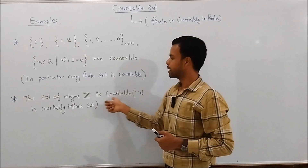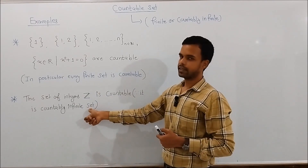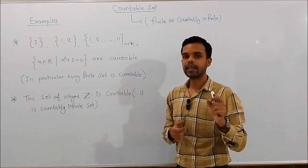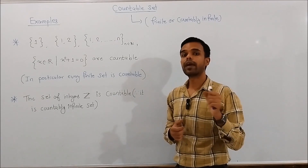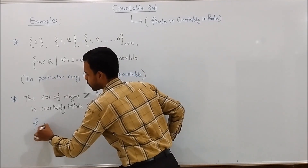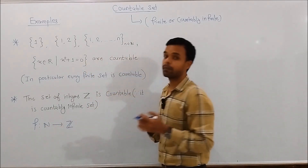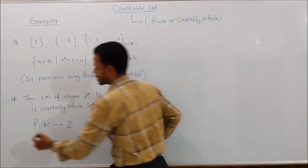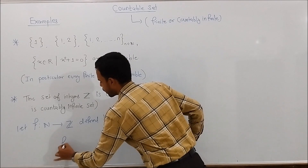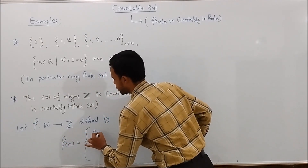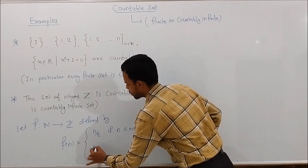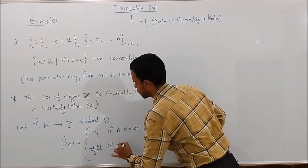Our next example is that the set of integers Z is a countable set, since it is a countably infinite set. A set S is said to be countably infinite if there exists a mapping F from the set of natural numbers to S which is a bijective map. So to show that Z is countably infinite we have to find a mapping F from the set of natural numbers to the set of integers which is bijective. Let's define F from the set of natural numbers to the integers by: f(n) = n/2 if n is even, and f(n) = -(n+1)/2 if n is odd.